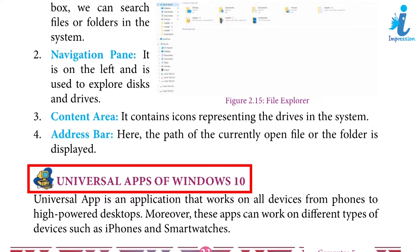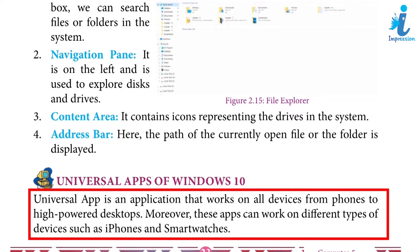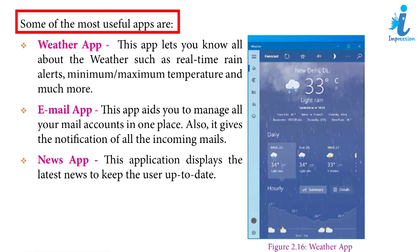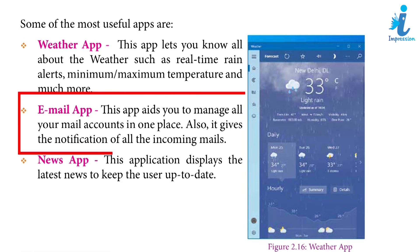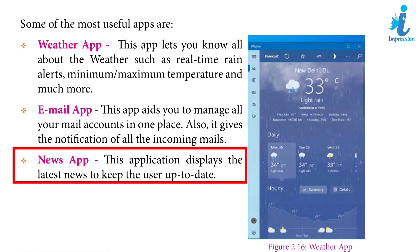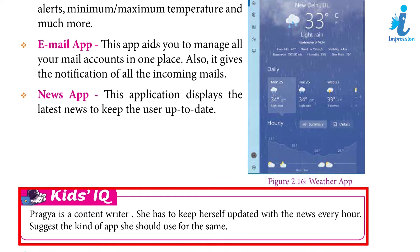Universal Apps of Windows 10: A universal app is an application that works on all devices, from phones to high-powered desktops. These apps can also work on different types of devices such as iPhones and smartwatches. Some of the most useful apps include: Weather app — lets you know all about the weather, such as real-time rain alerts and minimum/maximum temperature. Email app — helps you manage all your mail accounts in one place and keeps notifications of all incoming mails. News app — displays the latest news to keep the user up to date.